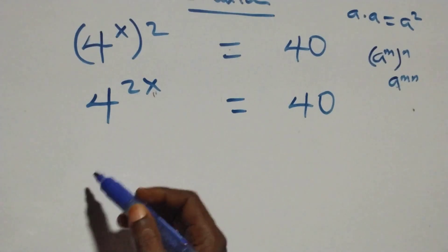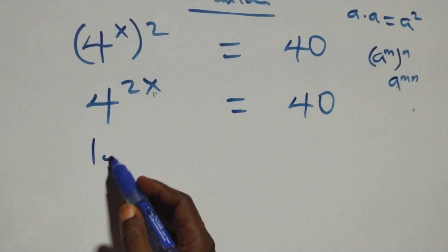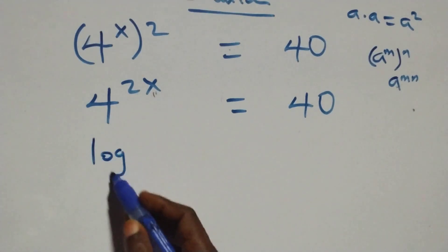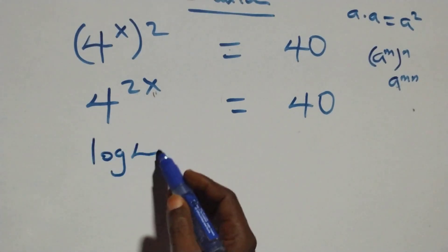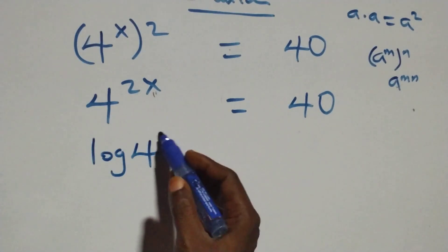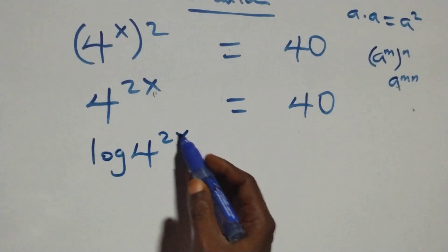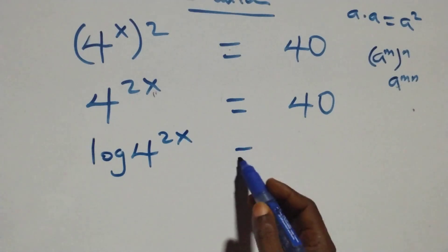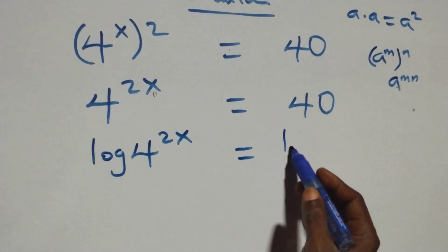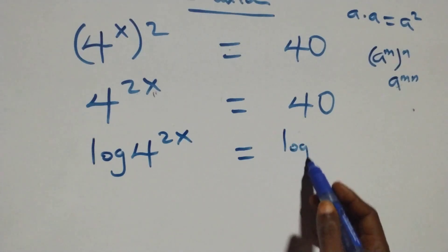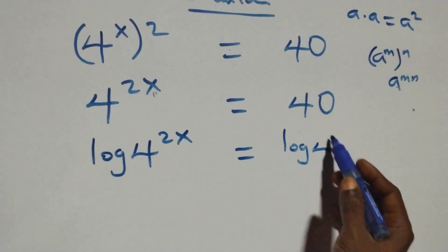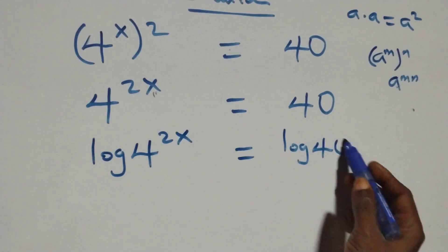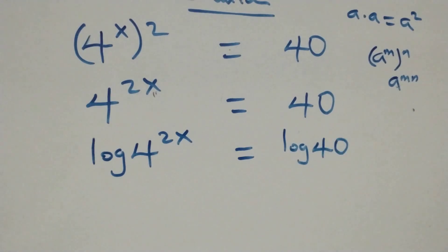The next step here: take the log on both sides. At this here, we have log of 4 raised to power 2x equals log 40 on this side.